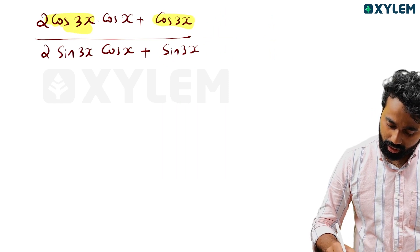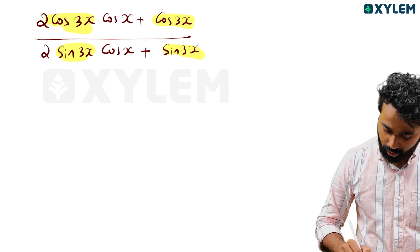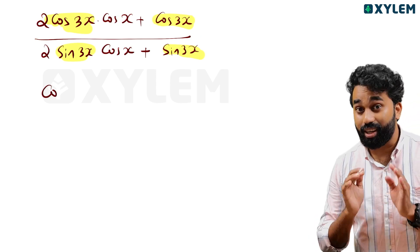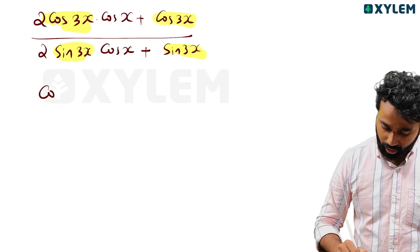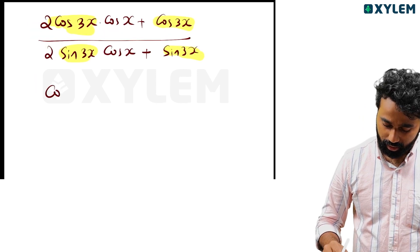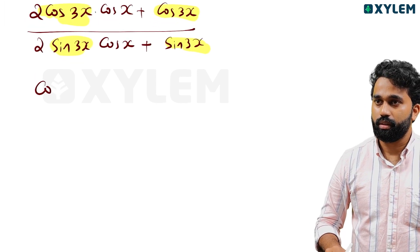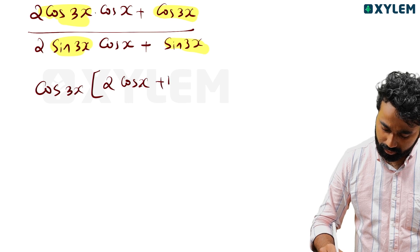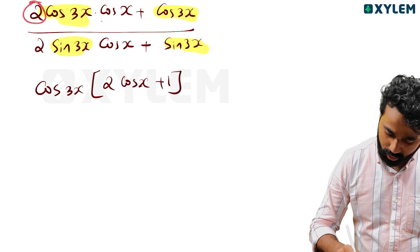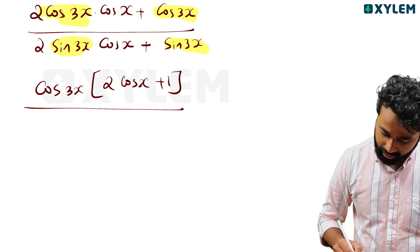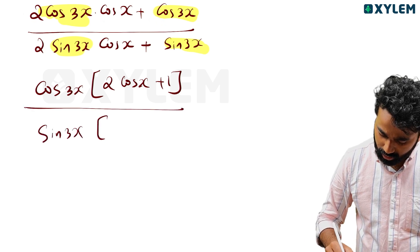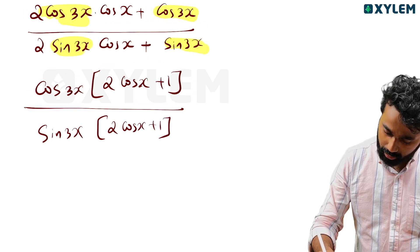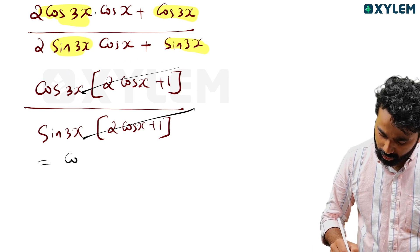cos 3x, 2 sin 3x, cos 3x into 2 cos x plus 1 divided by sin 3x into 2 cos x plus 1. This is the same term and this is the same term and this is the same term. cos 3x by sin 3x is equal to cos 3x. Hence proved.